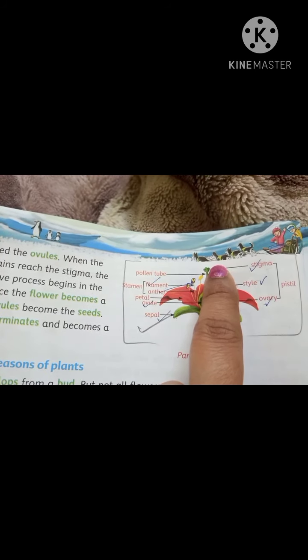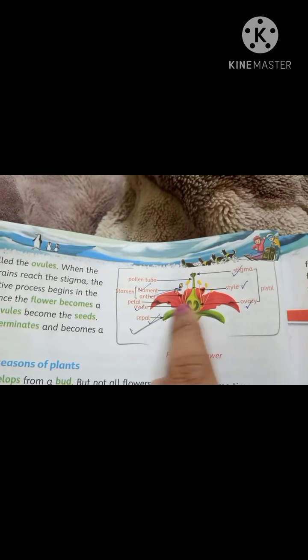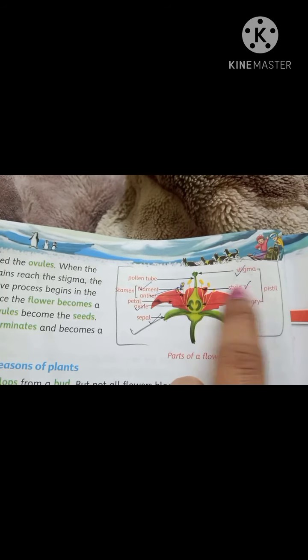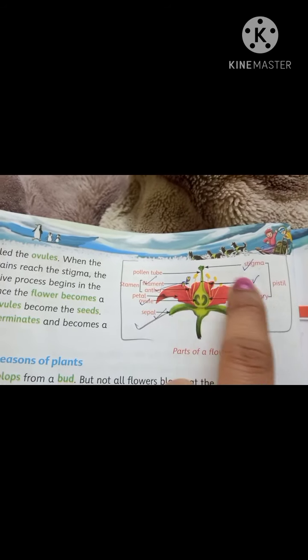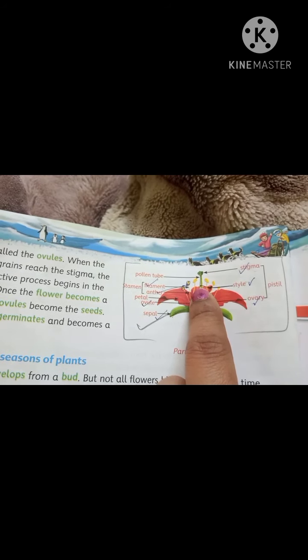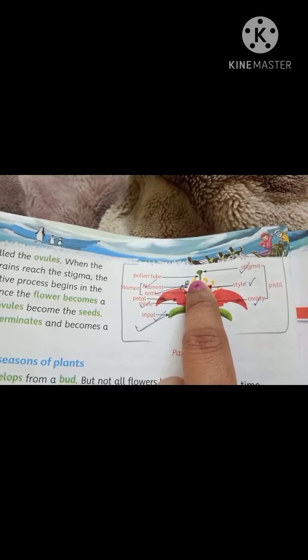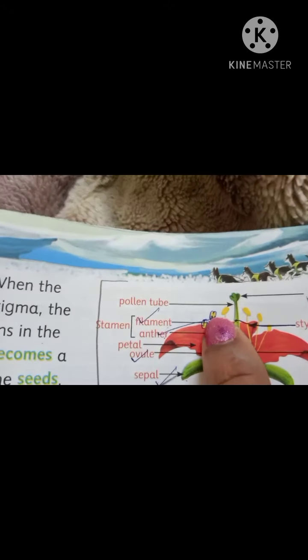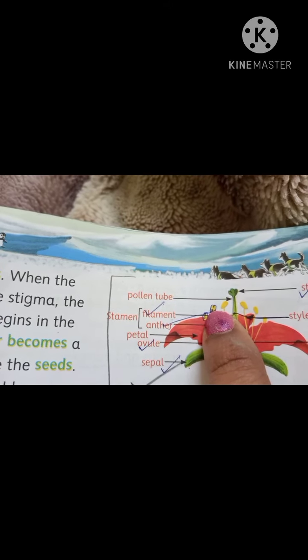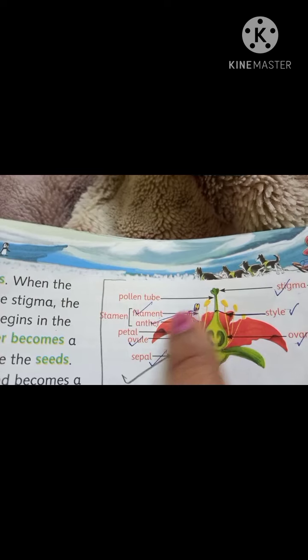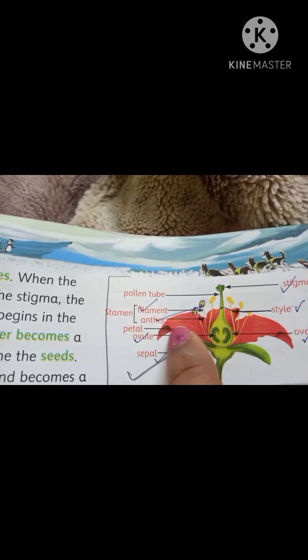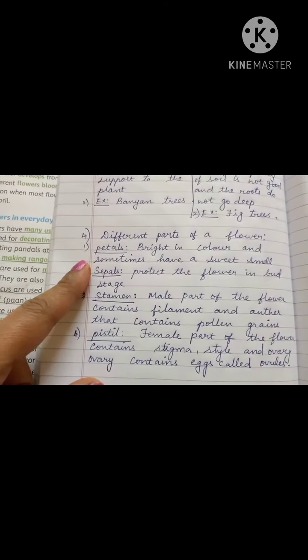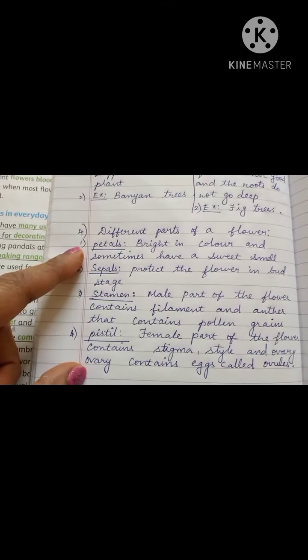Then mark the pollen tube. Note: in the book, anther and style are not given properly. For style, mark the middle tube-like portion. For anther, mark that yellow ball-like structure. Correct the anther and style in the book accordingly.